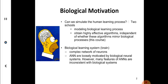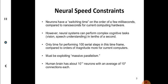Artificial neural networks are loosely motivated by biological neural systems. Neural speed constraints show that neurons have a switching time of a few milliseconds compared to nanoseconds for current computing hardware. However, neural systems can perform complex cognitive tasks in tenths of a second, allowing only time for performing 100 serial steps in a time frame. This is massive parallelism. The human brain has about 10 to the power 11 neurons with about 10 to the power 4 connections each. So many deep interconnections.